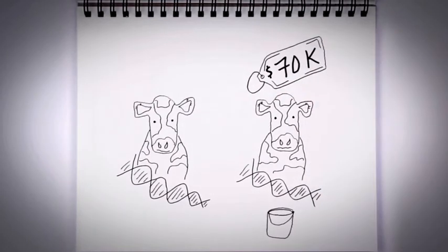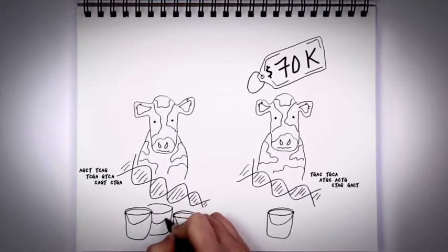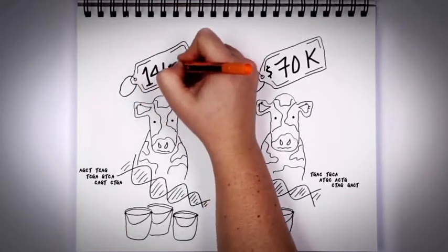Producers can now determine which calves have the genes related to the traits they want. Cows with a higher Genomics score produce more milk and demand higher prices at auction, sometimes as much as double.